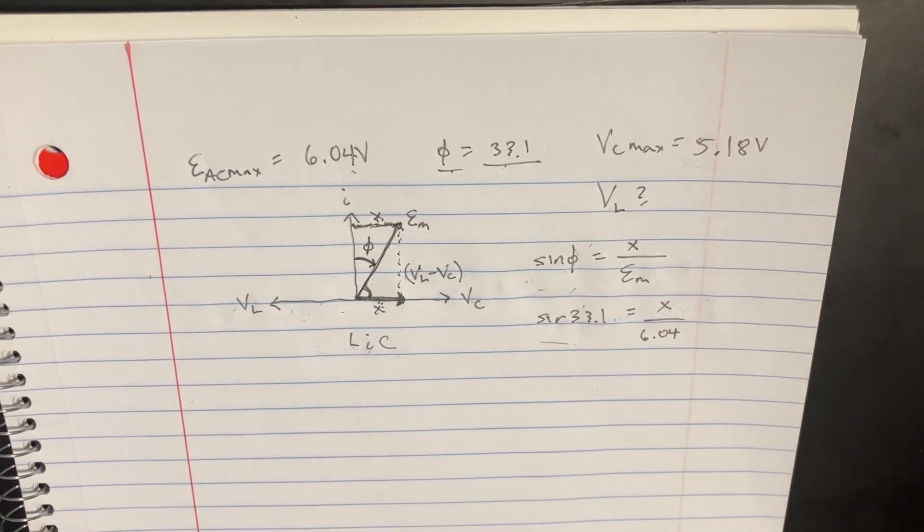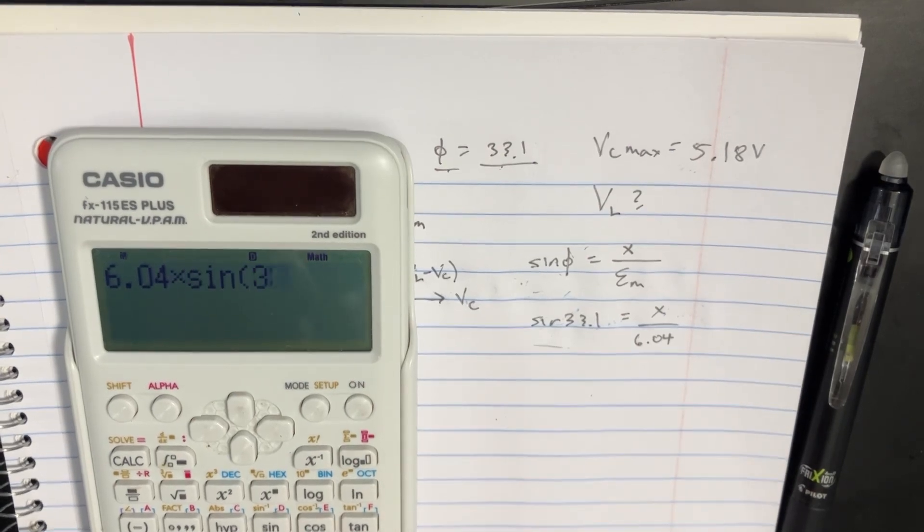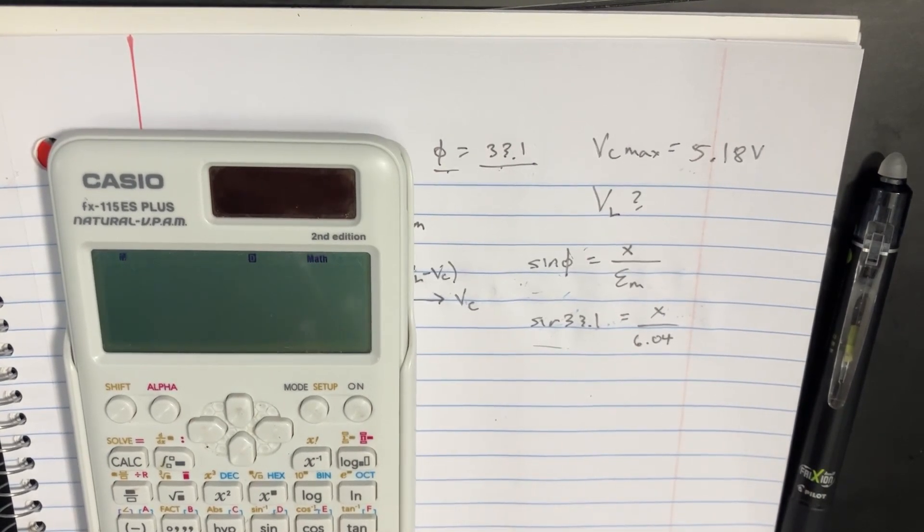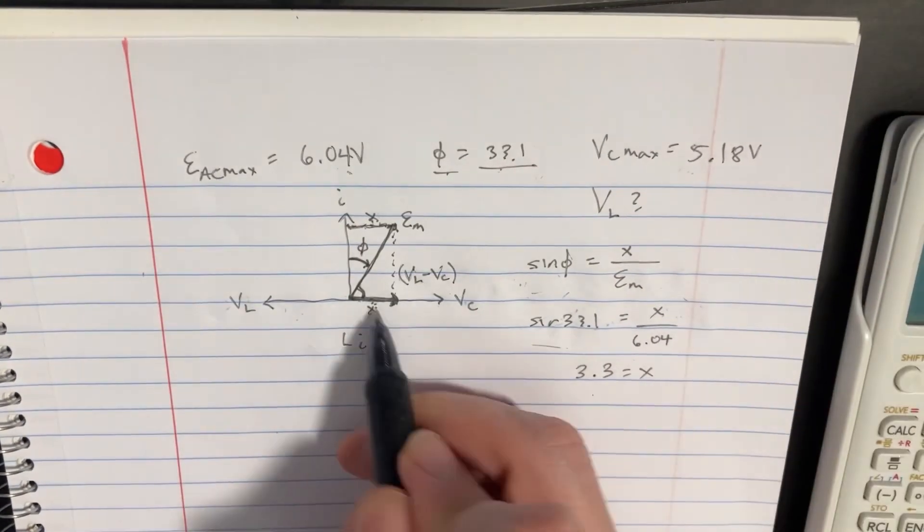Push that on the other side. So we're going to do 6.04 times the sine of 33.1. And so we're going to get 3.3 equals x. So that's that distance right there.